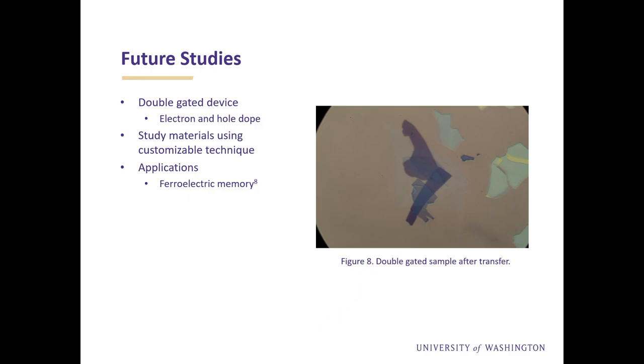Currently, we are working on a device that contains a double gate, and will hopefully produce more promising results. This is a more complicated design, but a double gate will allow us to electron and hole dope the sample and control the number of charged excitons in the device.